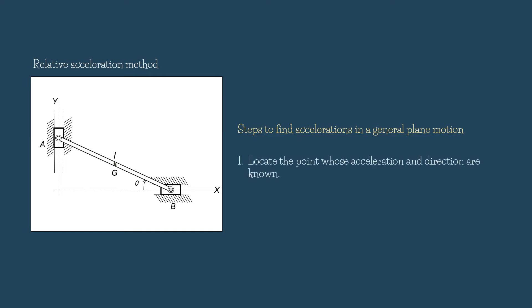Step 1: Locate the point whose acceleration and direction are known. According to the problem, point A moves with a constant velocity downward. So in this case, there is no acceleration at point A. Therefore, acceleration of A equals zero.